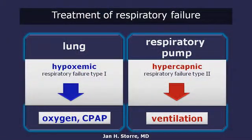The different compartments are very important for the treatment. Once the patient suffers from hypoxemic respiratory failure or respiratory failure type 1, the patient needs a supply of oxygen or a continuous positive airway pressure. On the other hand, if the patient suffers from ventilatory failure and the respiratory pump is affected, the patients need help for ventilation, and this is done by mechanical ventilation.